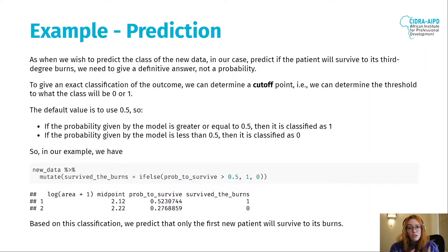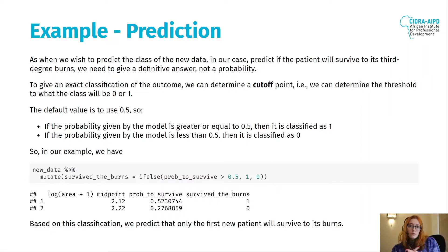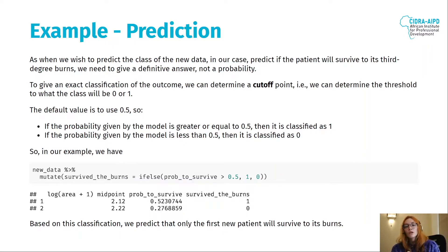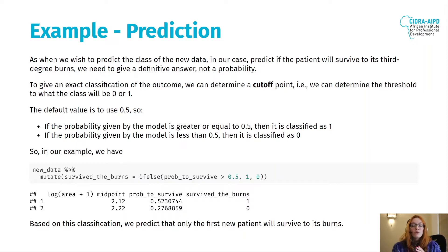The default, most commonly used cutoff is 0.5 — 50%. If the probability the model gives is greater than or equal to 0.5, we classify as 1, as a success — in our case, survival. If the probability is less than 0.5, we classify as 0, as a failure — in our case, death.